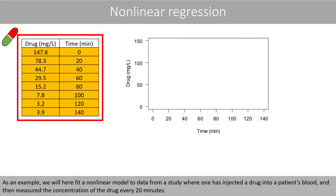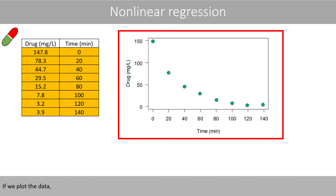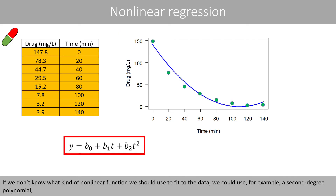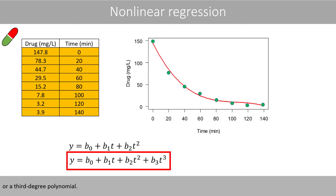As an example, we will fit a nonlinear model to data from a study where one has injected a drug into a patient's blood, and then measured the concentration of the drug every 20 minutes. If we plot the data, it is clear that a straight line is not appropriate. If we do not know what kind of nonlinear function to use, we could use, for example, a second degree polynomial or a third degree polynomial.